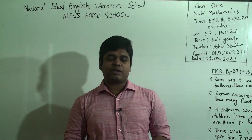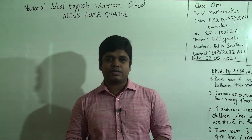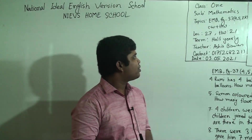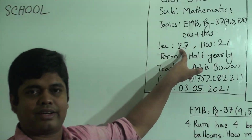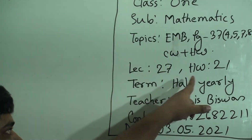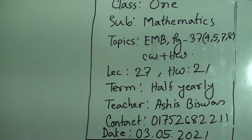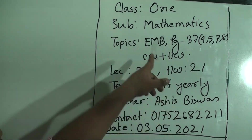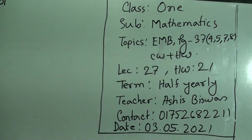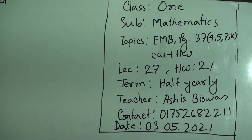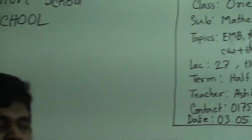Today I am going to take a math class for the students of class 1. So my dear students, let us start our class. Today is our lecture number 27 and today's SW number will be 21. Our today's topic is word problems, which is taken from our EMB book. Do you know what EMB means? EMB means elementary mathematics book.